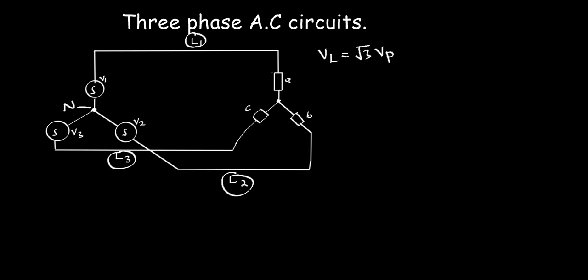The phase voltage is the voltage drop across the loads. I have load A, load B, and load C. For the loads we can have balanced loads or unbalanced loads. The balanced load is when all the loads are the same — for example, they have the same resistance. The unbalanced load is when all the loads are not the same.